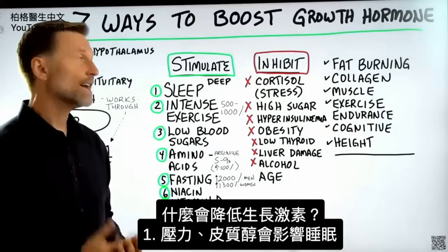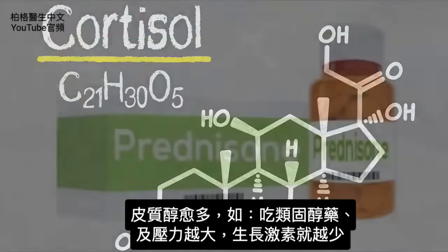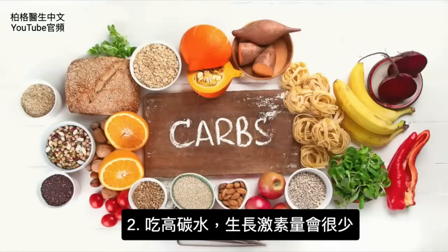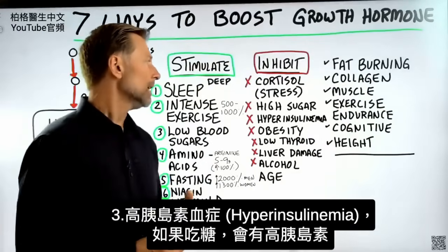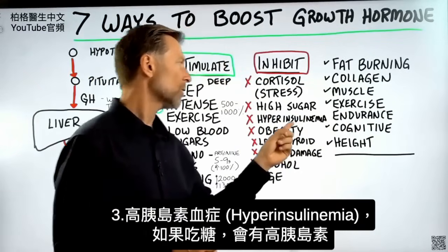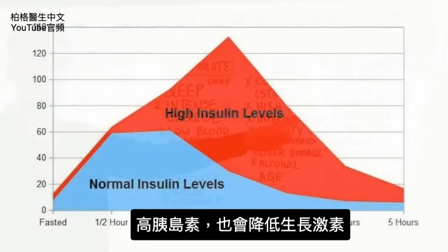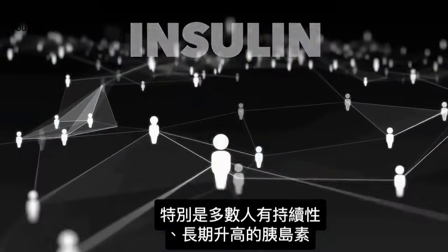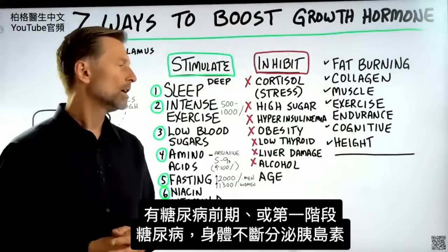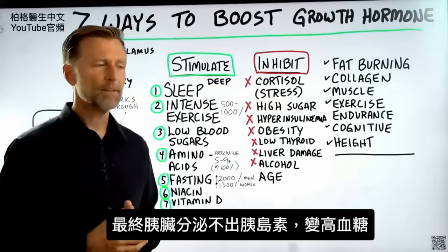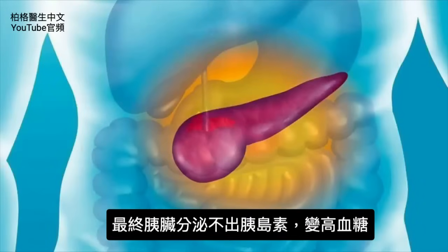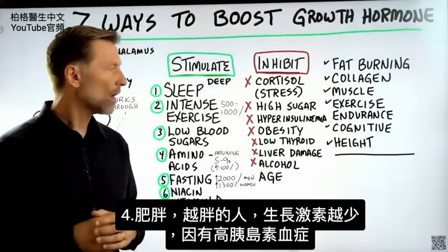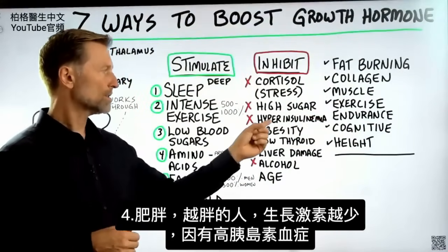Now let's talk about what can inhibit growth hormone. Stress and cortisol will affect your sleep — the more cortisol you're exposed to, such as from a medication like prednisone, the less growth hormone you're going to have. If your diet is high in carbohydrates, you're not going to have nearly the amount of growth hormone you need. This also goes along with hyperinsulinemia — if you're eating sugar, you'll have high insulin. High, sustained, or chronic elevated insulin knocks down growth hormone significantly, as seen in pre-diabetes and the early stages of diabetes. Obesity also reduces growth hormone, likely because of hyperinsulinemia.